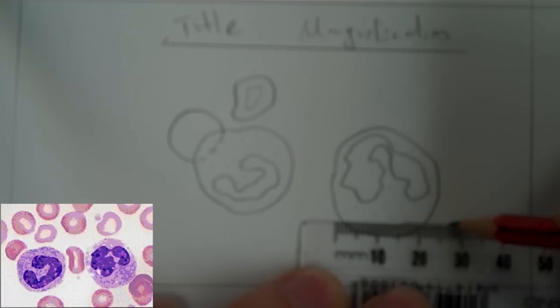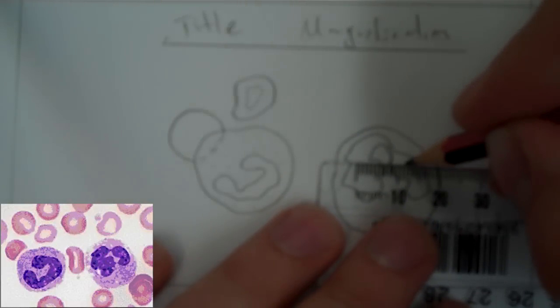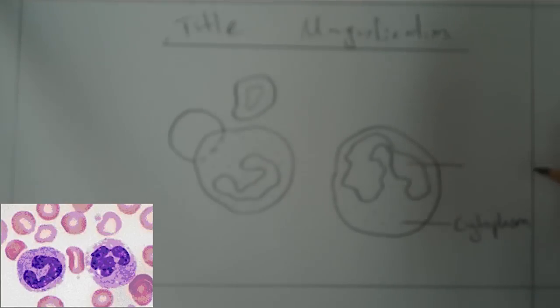So we can put, this is the nucleus. You'll notice it's what we call a multi-lobed nucleus. This is quite typical for some of our white blood cells. So I'll just put nucleus though.